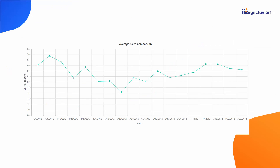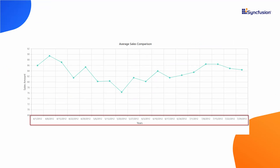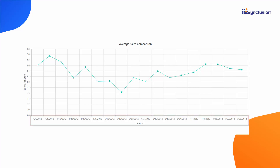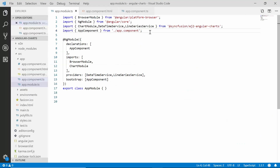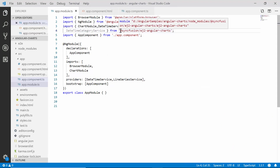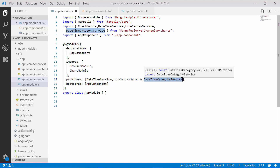Finally, I'm going to show you how to display datetime values with a nonlinear interval. Sometimes, depending on your chart data, you may want to display only the business days of the week in the datetime axis — for example, only weekdays. In this case, you need to make use of the datetime category axis. To show this with better clarity, I'm going to use a simple stock market dataset, as stock market prices usually change only on weekdays from Monday to Friday. Within the app module file, import the DateTimeCategoryService from the Syncfusion EJ2 Angular Charts package and inject it within the provider section.